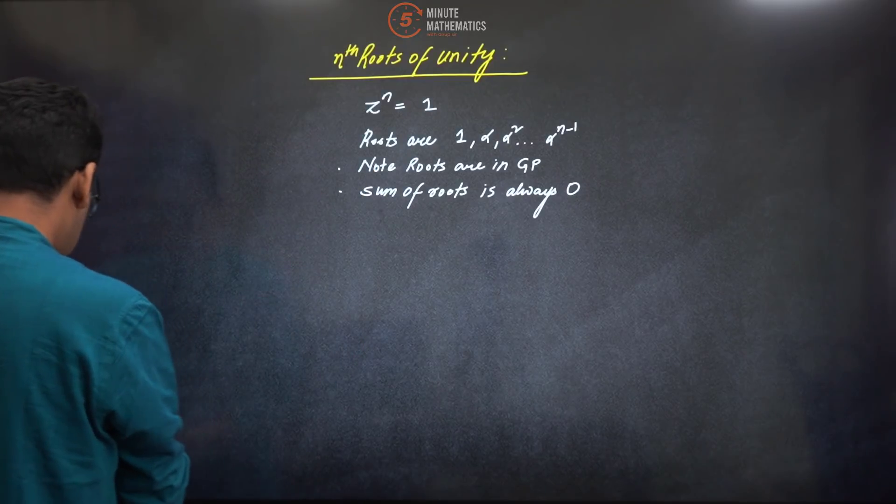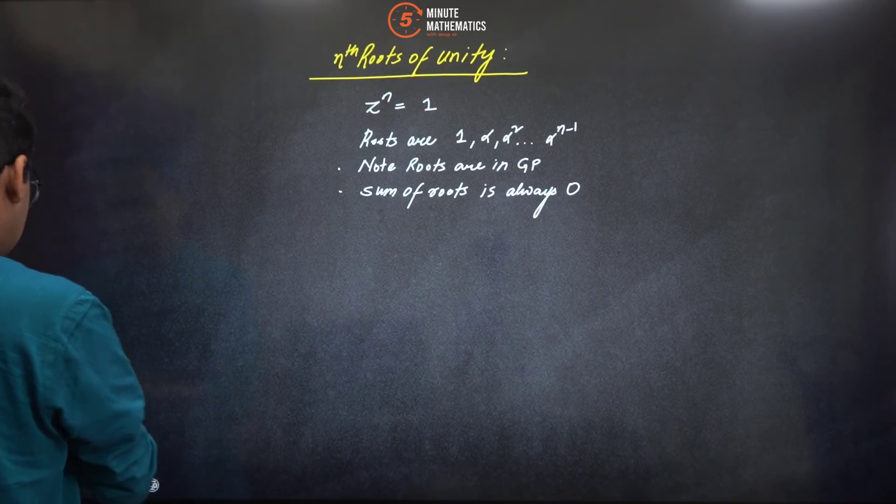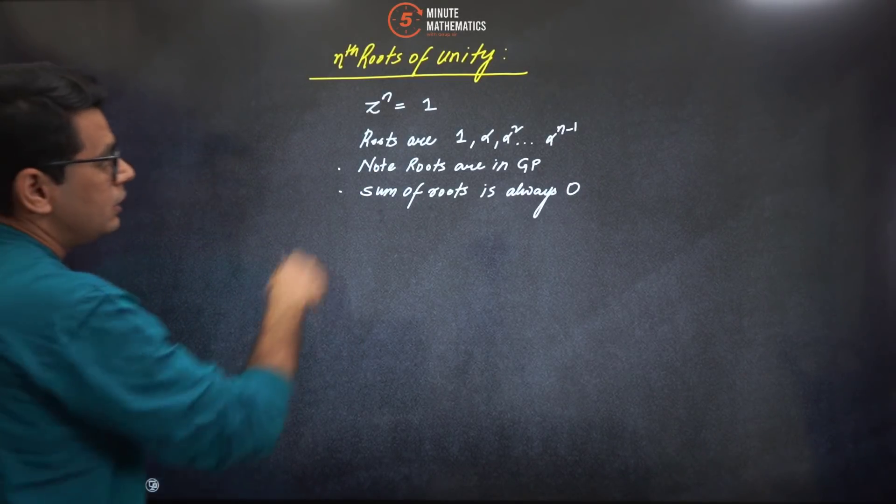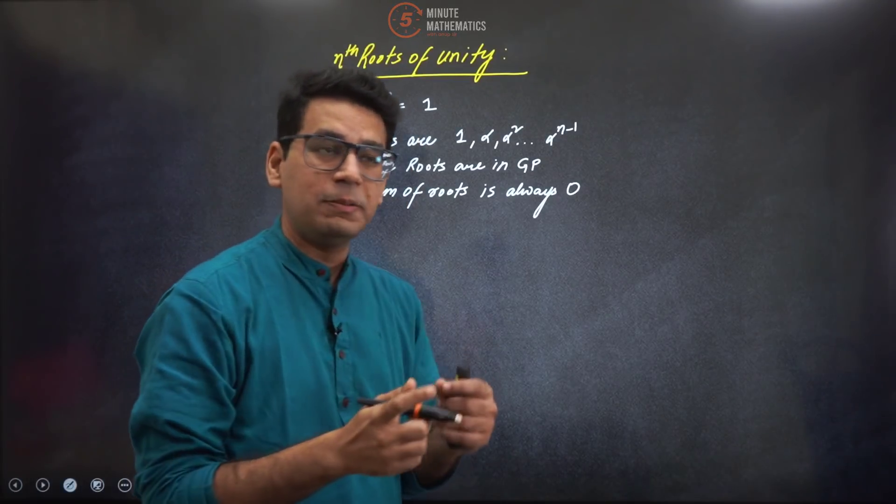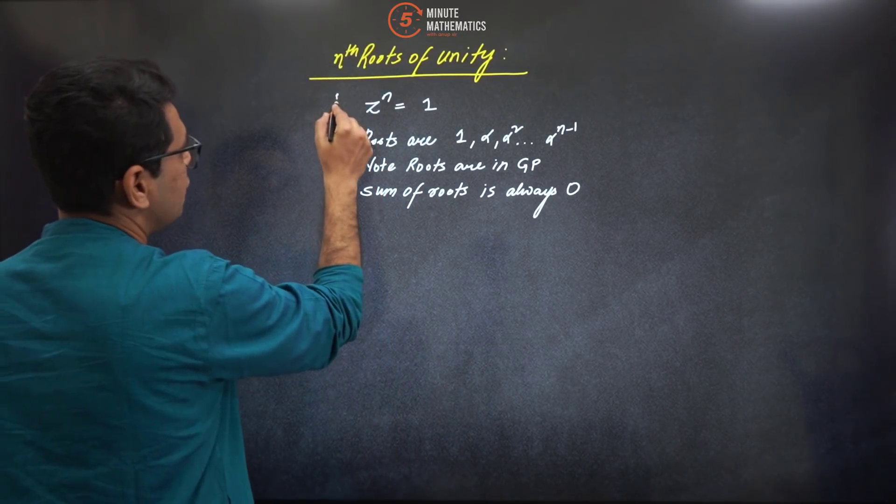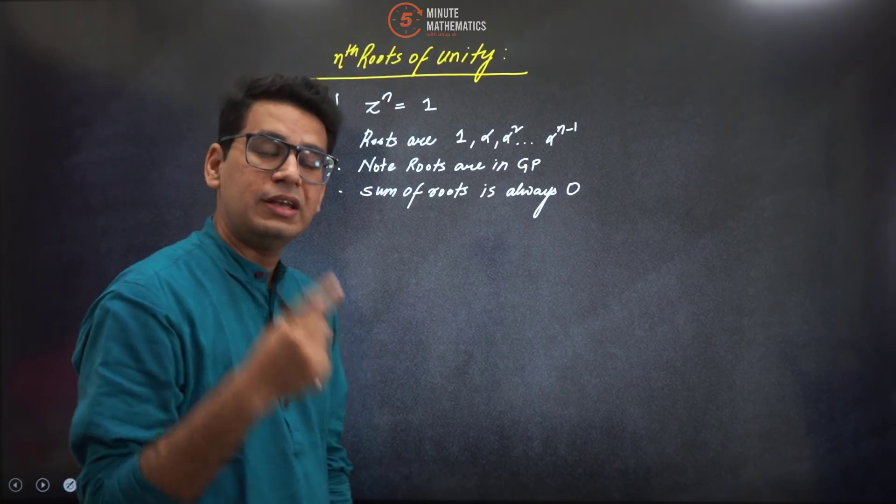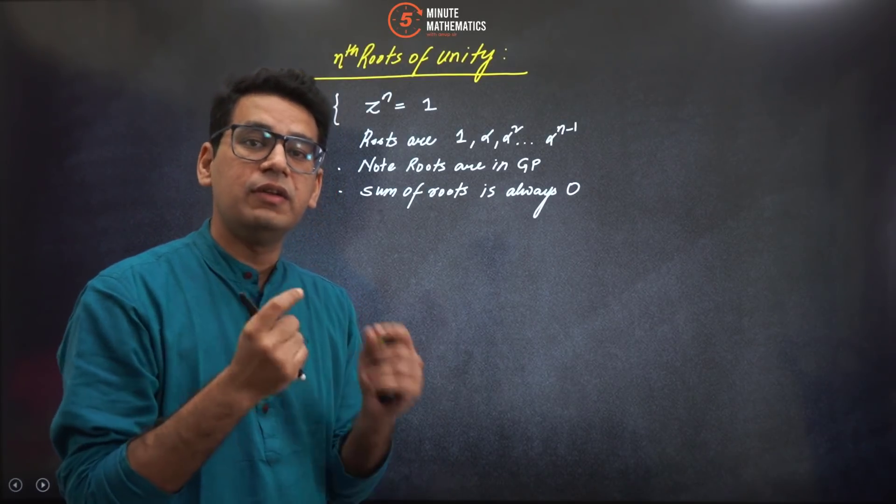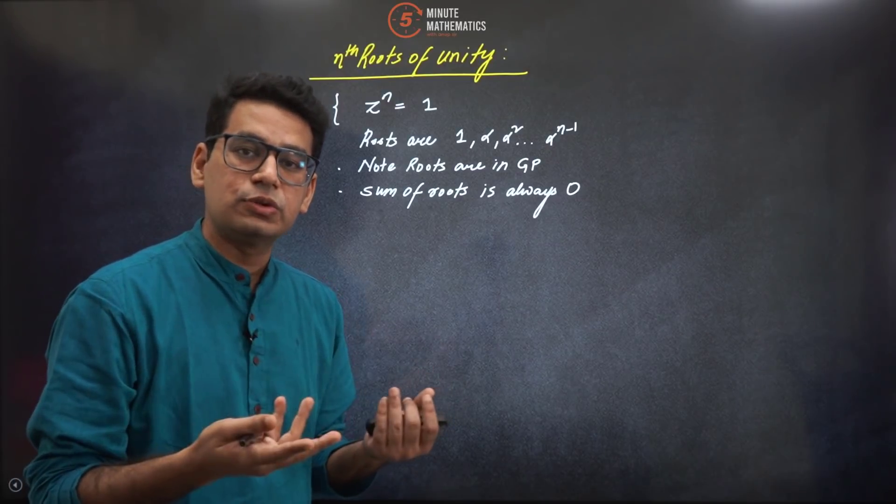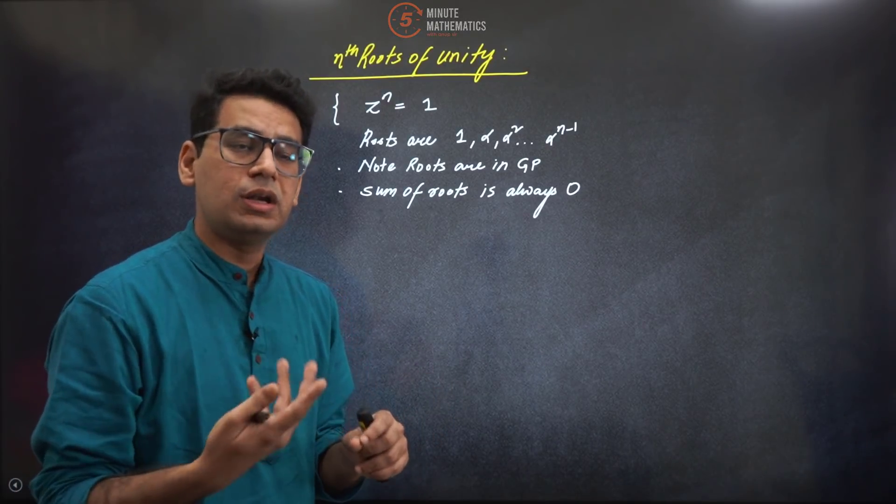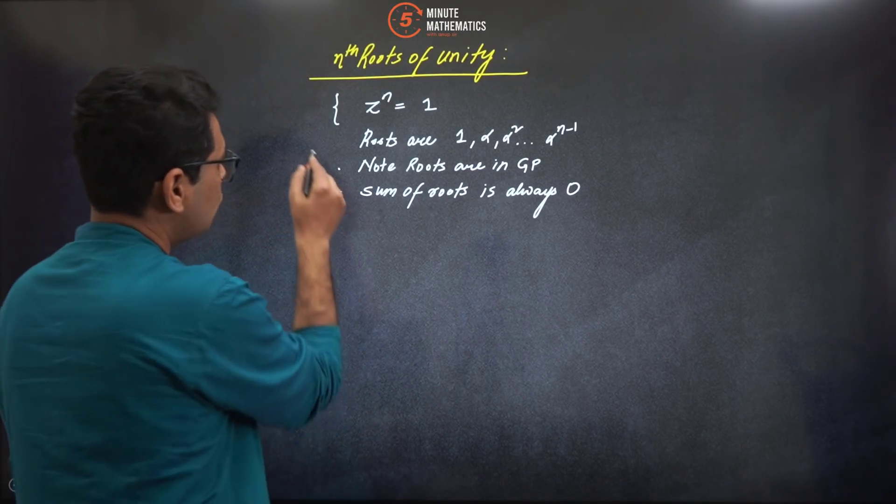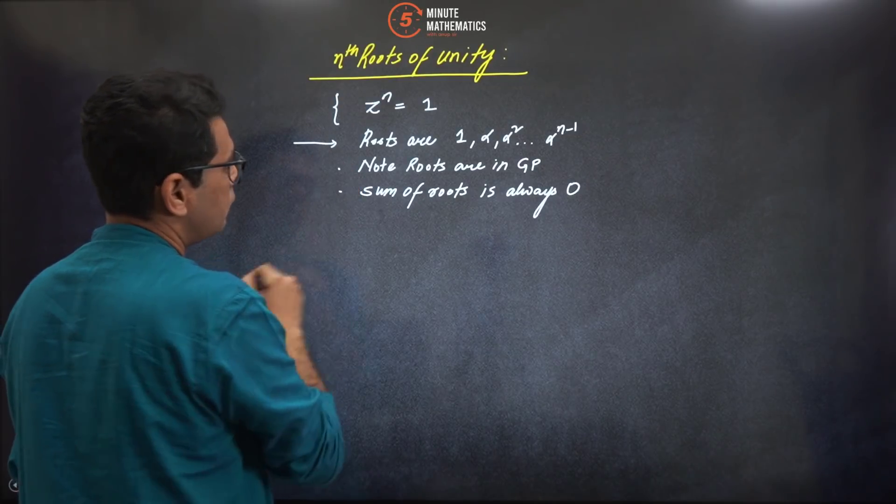The basic is that nth root of unity is for this kind of expression: when we have z raised to power n equal to one. That means there's not one root - there will be n roots. One is definitely real when you put z equal to one, the others could be imaginary or real depending on the value of n.